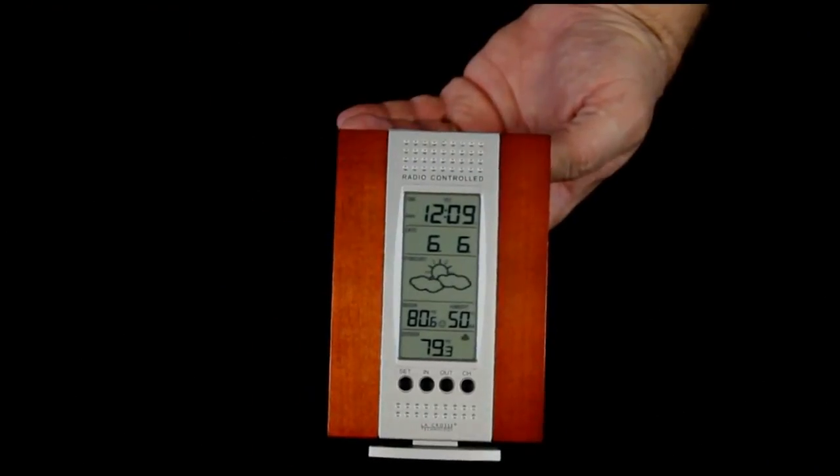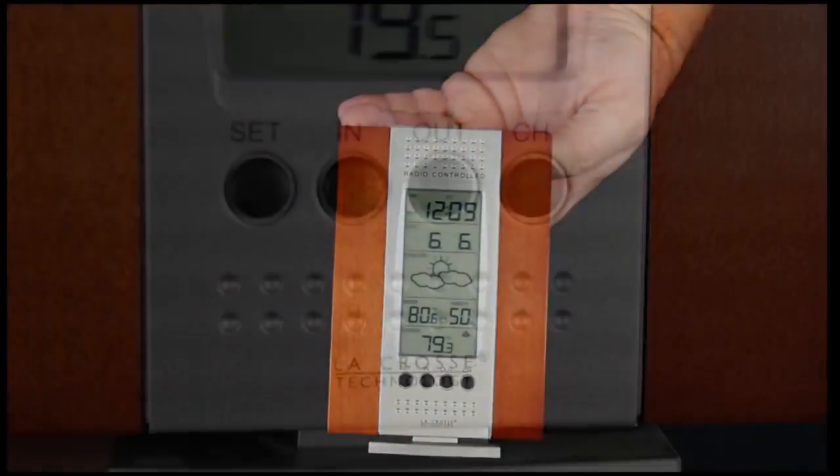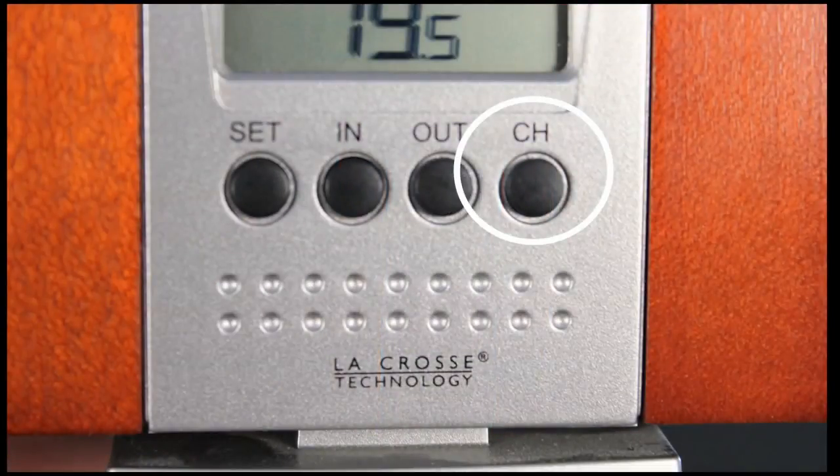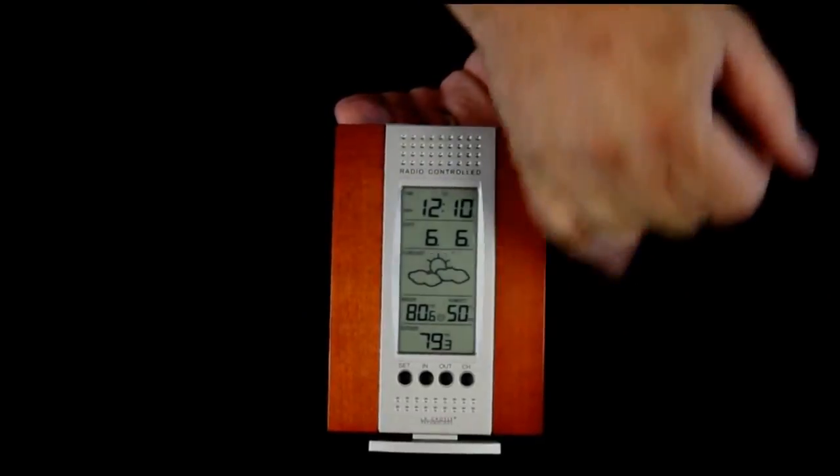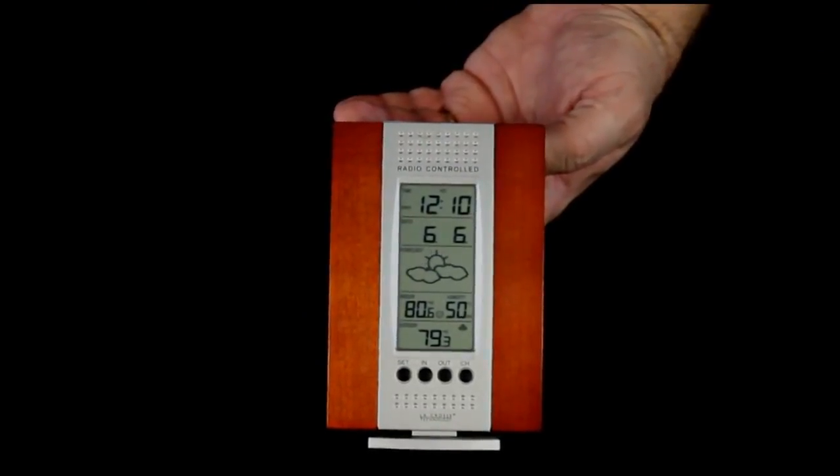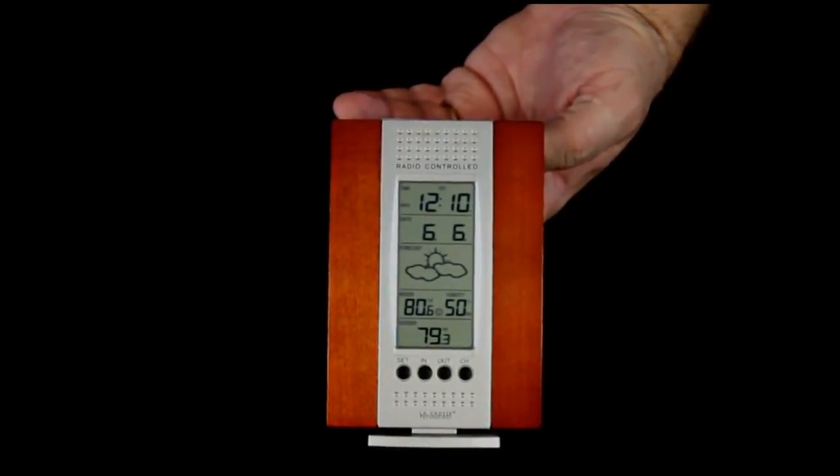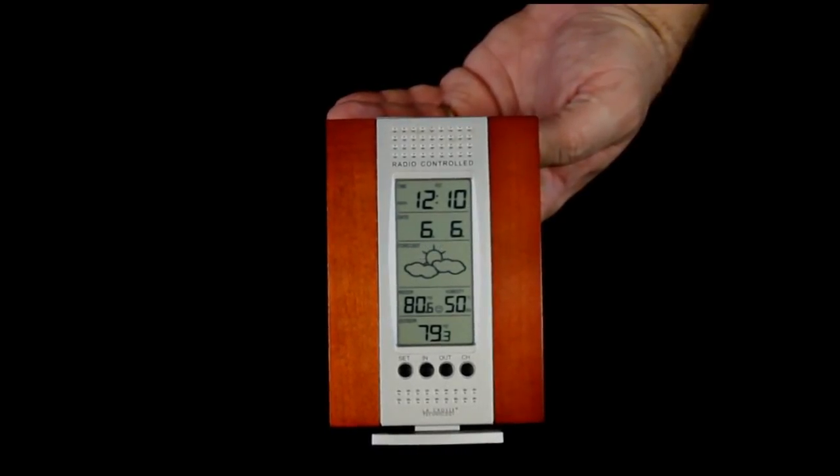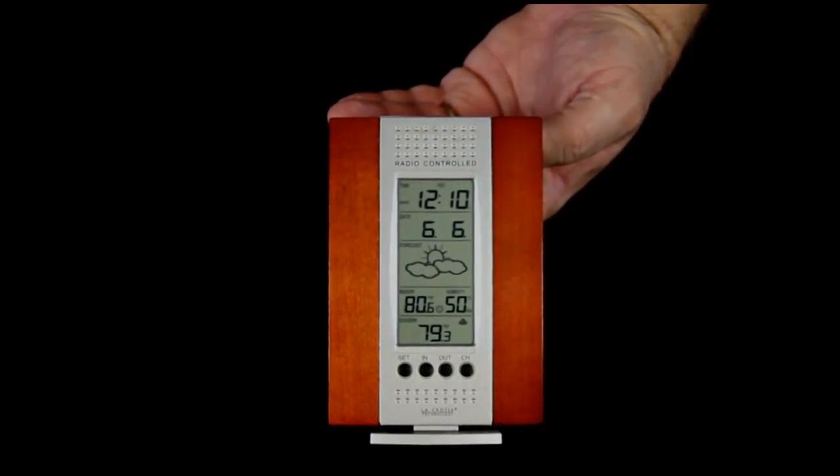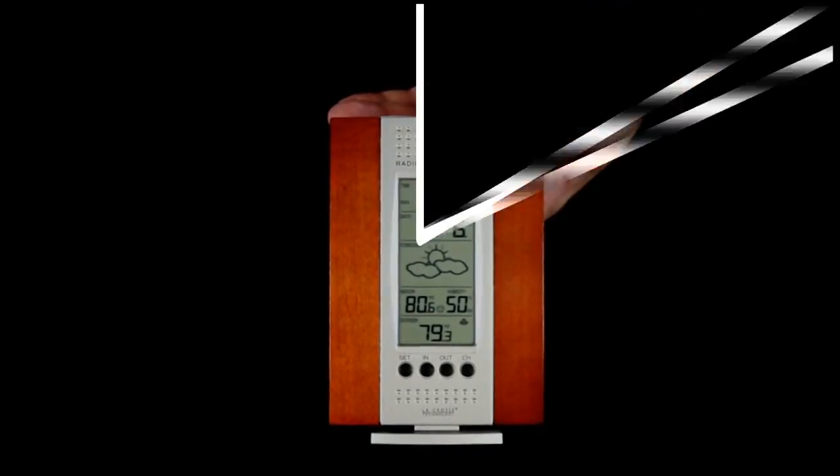One interesting feature about this station is the channel button. You can run up to three different sensors on this unit, and those sensors are controlled in by the channel button. All of the sensors should be model TX29, and you can use a sensor to check the outdoor temperature, the temperature in the garage, and perhaps the temperature in one of the other bedrooms.